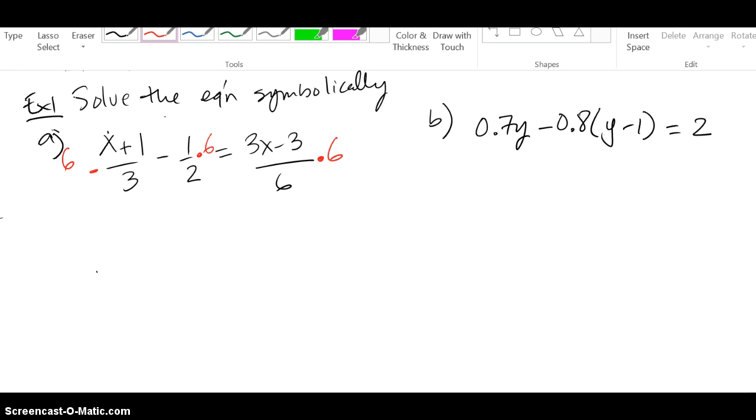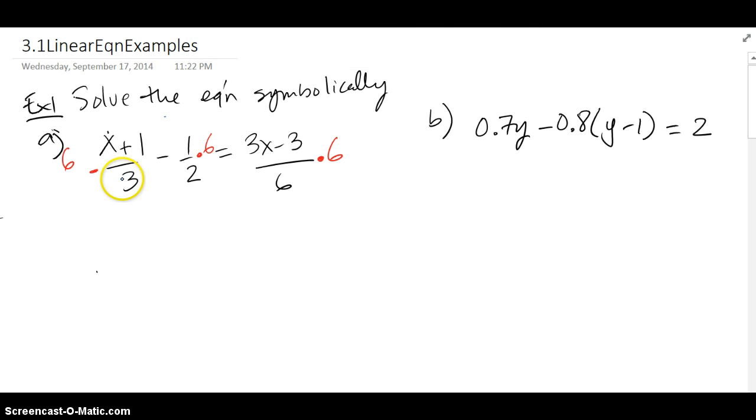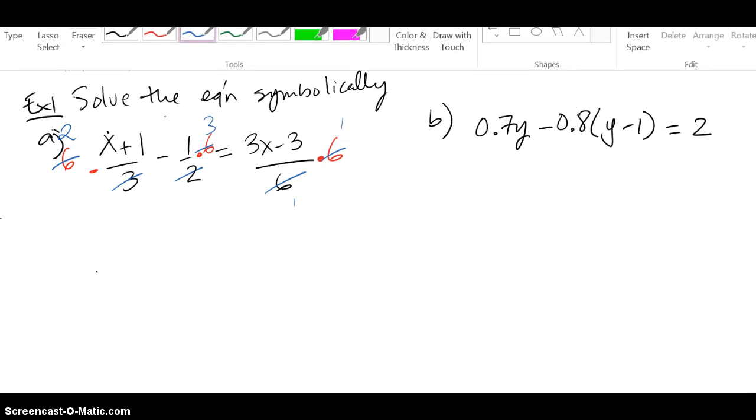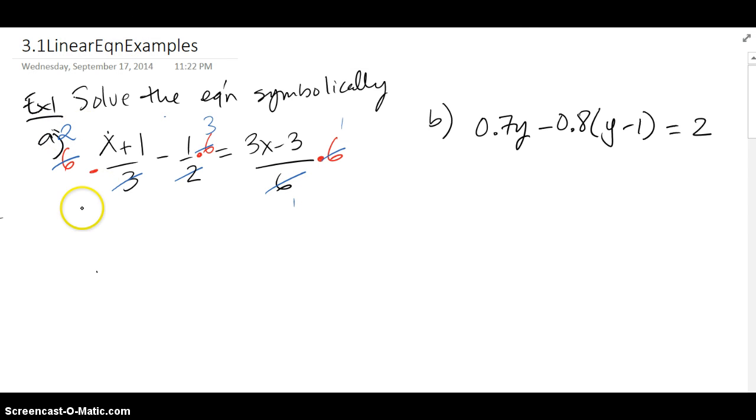Once I make sure the left side and the right side get multiplied by 6, some reducing occurs conveniently. And now I can end up with just a 2 in the numerator and an x+1 left, minus 1 times 3 is 3, equals 3x-3. So just in the first step, we were able to wipe out the fractions.